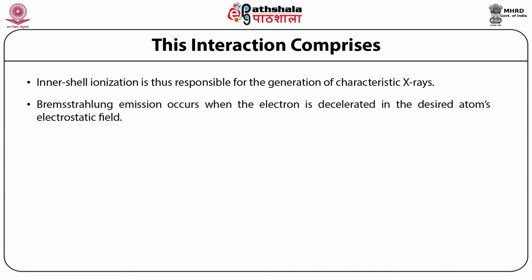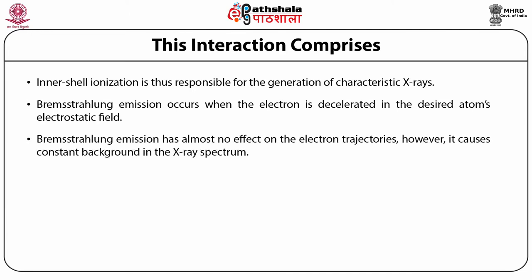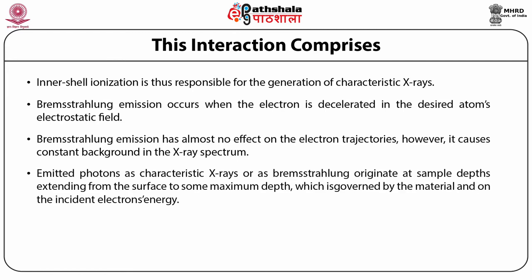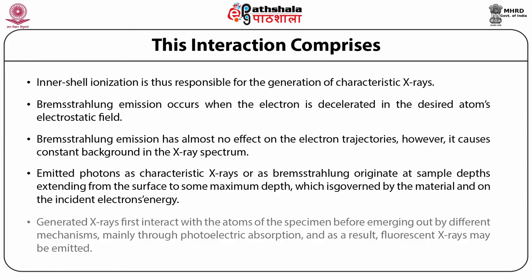Bremsstrahlung emission occurs when the electron is decelerated in the target atom's electrostatic field. Bremsstrahlung emission has almost no effect on the electron trajectories. However, it causes a constant background in the X-ray spectrum. Emitted photons as characteristic X-rays or as Bremsstrahlung originate at sample depths extending from the surface to some maximum depth, which is governed by the material and on the incident electron's energy. Generated X-rays first interact with the atoms of the specimen before emerging out through different mechanisms, mainly through photoelectric absorption, and as a result, fluorescent X-rays may be emitted.